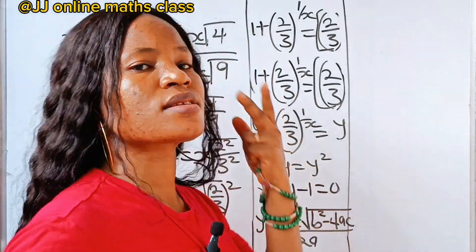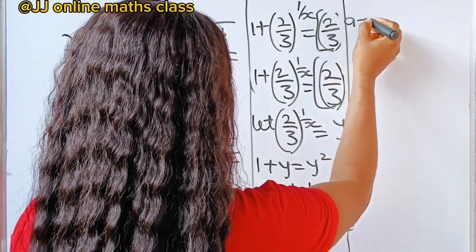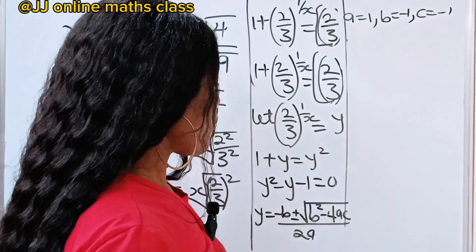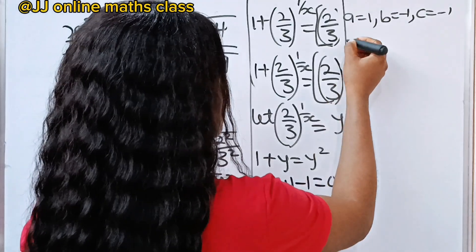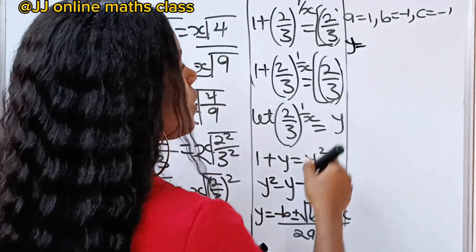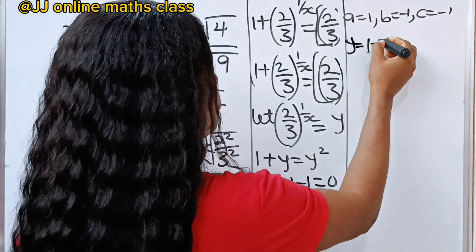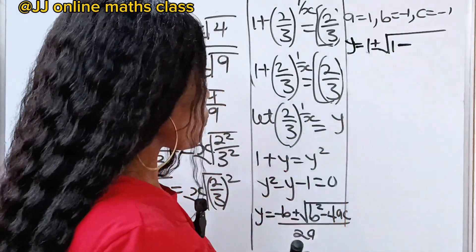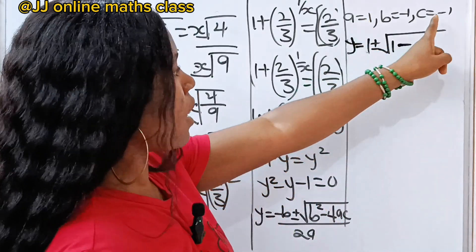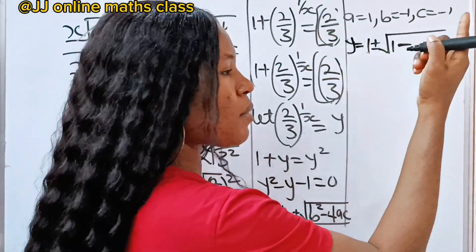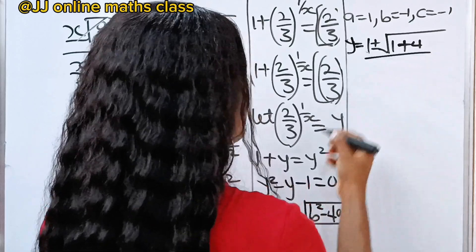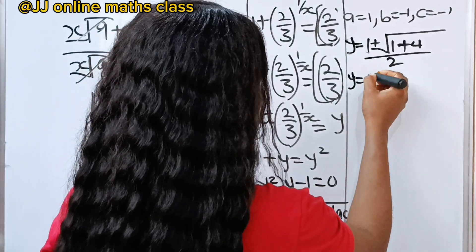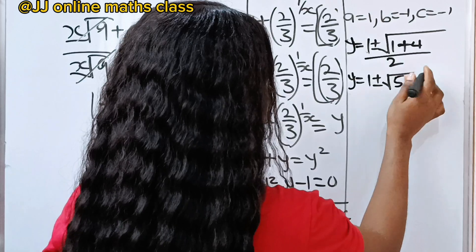In this case, our a is equal to 1, our b is equal to minus 1, and our c is equal to minus 1. Using the quadratic formula: y equals minus b, that is minus of minus 1, which is plus 1, plus or minus square root of b squared — that is minus 1 squared, which is 1 — minus 4 times a times c, that is 4 times 1 times minus 1 equals minus 4, and minus times minus 4 becomes plus 4. Divided by 2a, that is 2 times 1, which is 2. So we have y equals 1 plus or minus square root of 5, over 2.